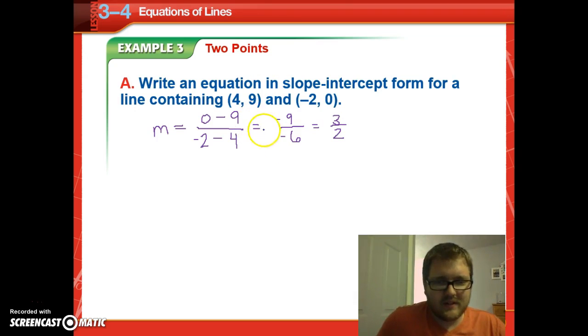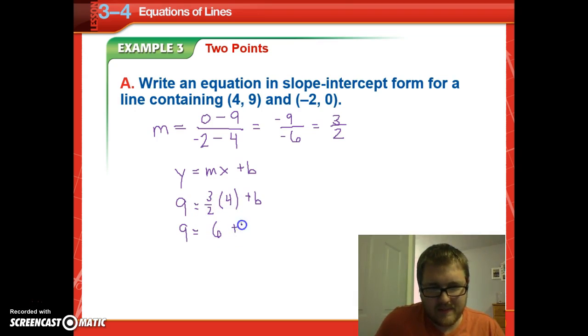We can use either point to get our slope-intercept form. We want to remember y equals mx plus b, but we don't know b. So we'll put in 9. I'm just going to choose the first equation. 9 equals 3 halves times 4 plus b. Now we're going to solve for b. So 9 equals 3 times 4 is 12, divided by 2 is 6 plus b. Subtract 6 from each side, we get 3 equal to b. So y equals our slope, 3 halves, x plus b, which is 3. And there's our final answer.